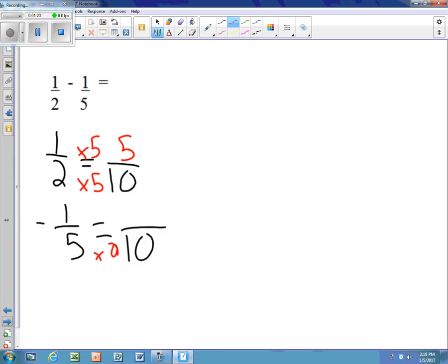5 times 2 is 10, and 1 times 2 is 2. And when we subtract 5/10 minus 2/10, we get 3/10. We just have to make sure we're paying attention to the subtraction.